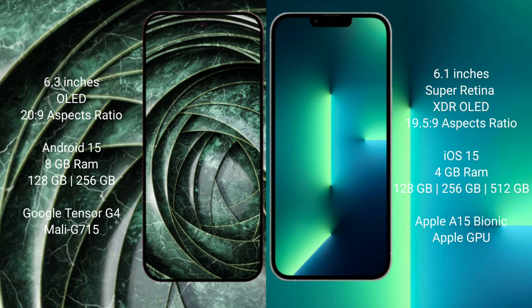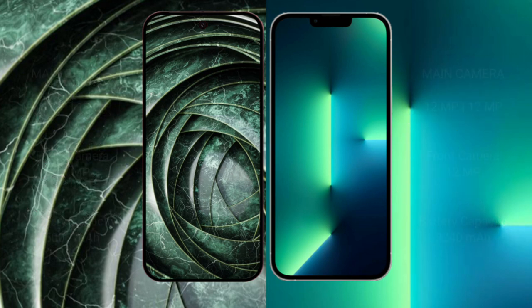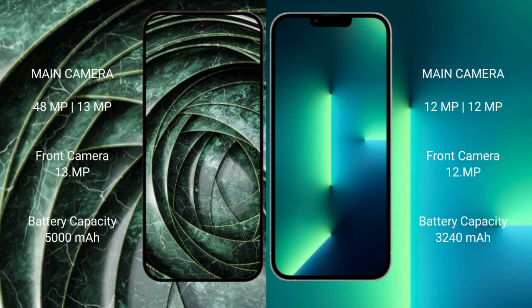Google Pixel 9a has a rear dual camera setup of 48 megapixels plus 13 megapixels, and a front camera of 13 megapixels. iPhone 13 has a rear dual camera setup of 12 megapixels plus 12 megapixels, and a front camera of 12 megapixels.